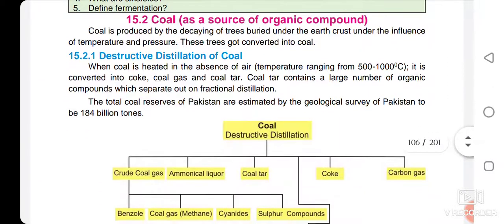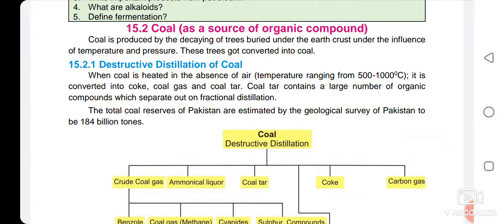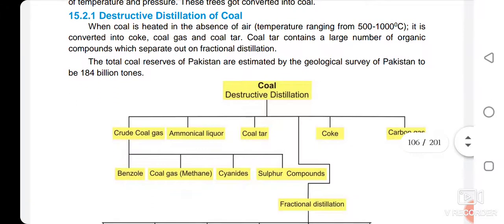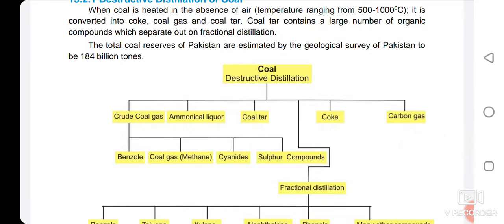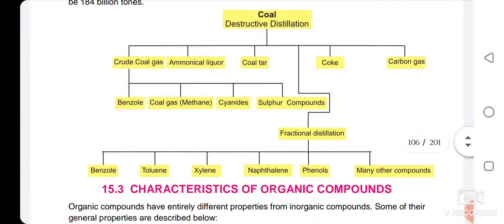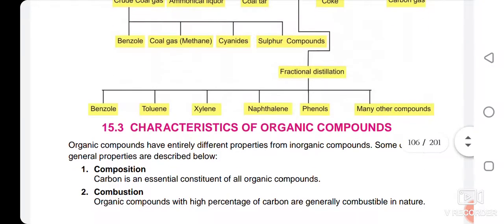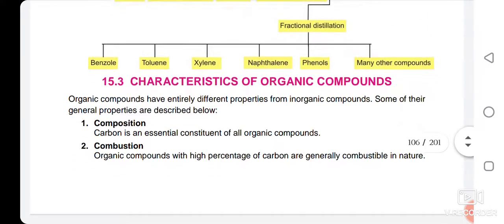Coal is a major source of organic compounds. We will discuss the flow sheet diagram of the destructive distillation of coal. When coal is subjected to destructive distillation, we get these fractions: carbon gas, coke, coal tar, ammoniacal liquor, and crude coal gas. Crude coal gas further produces purified coal gas which contains methane, cyanide, and sulfur compounds. Fractional distillation of coal tar yields benzene, toluene, xylene, naphthalene, phenols, and many other useful organic compounds.